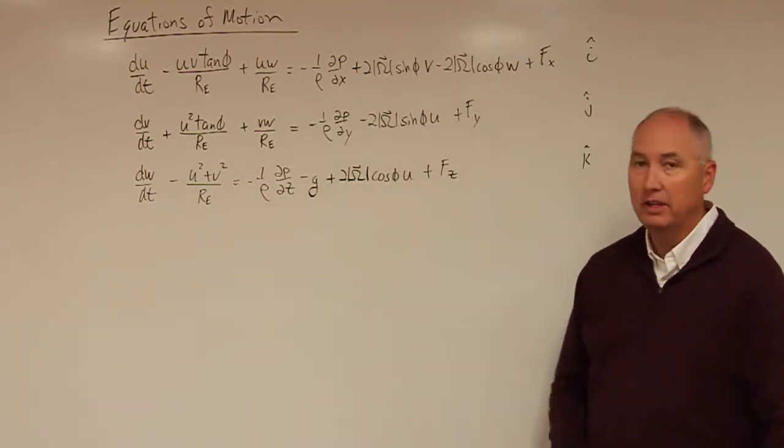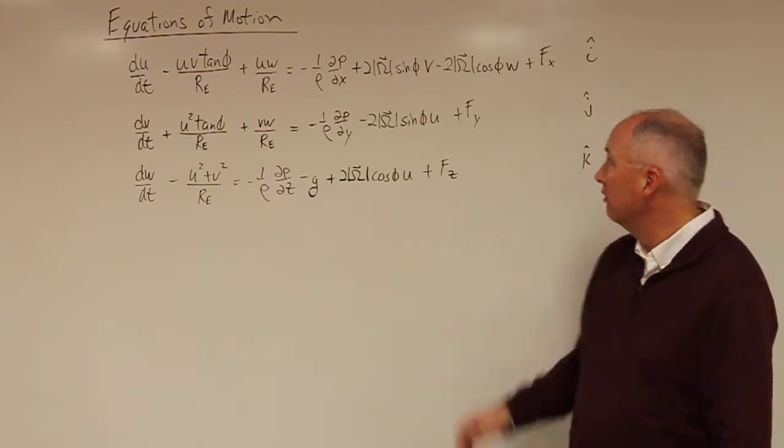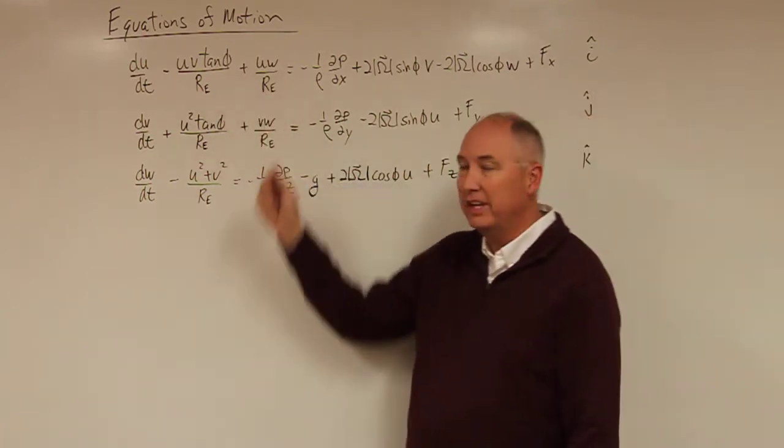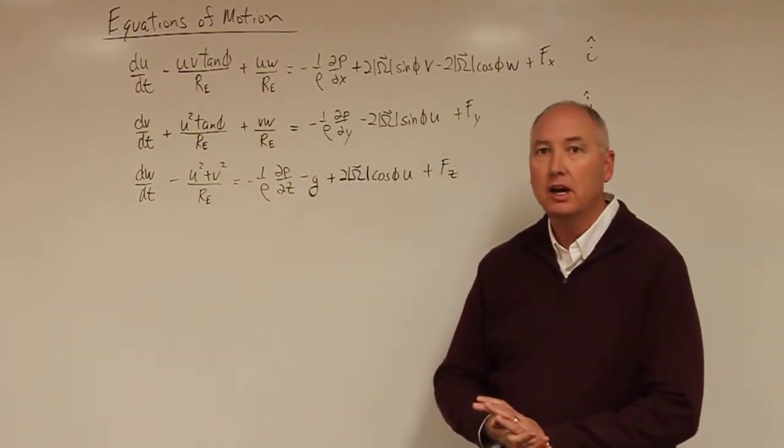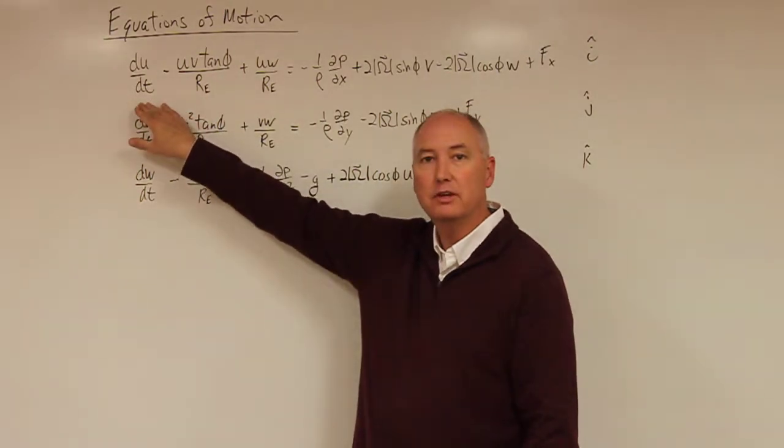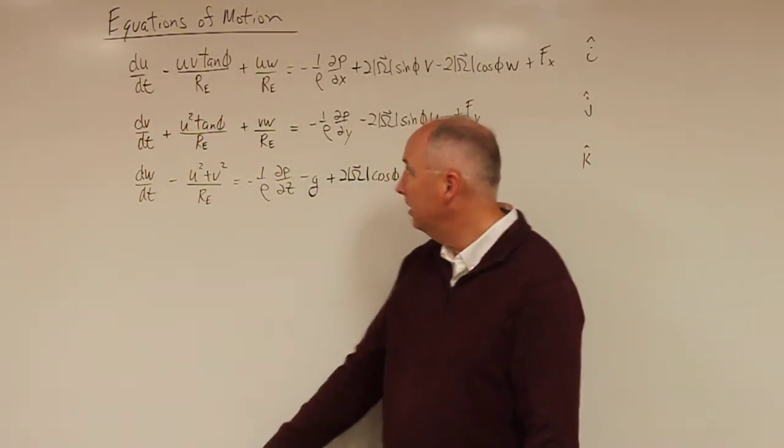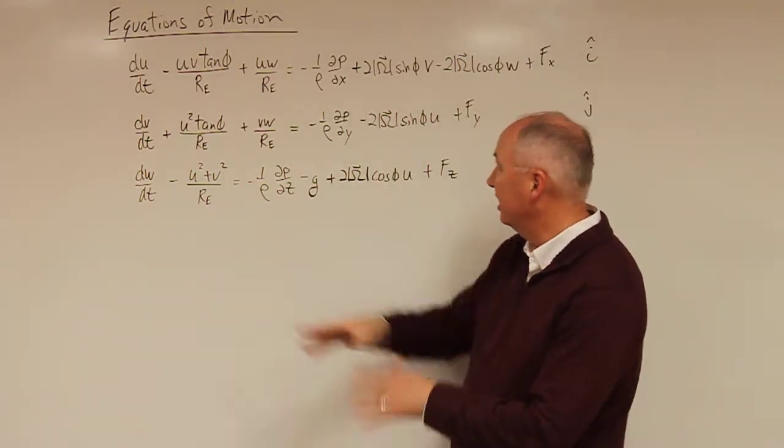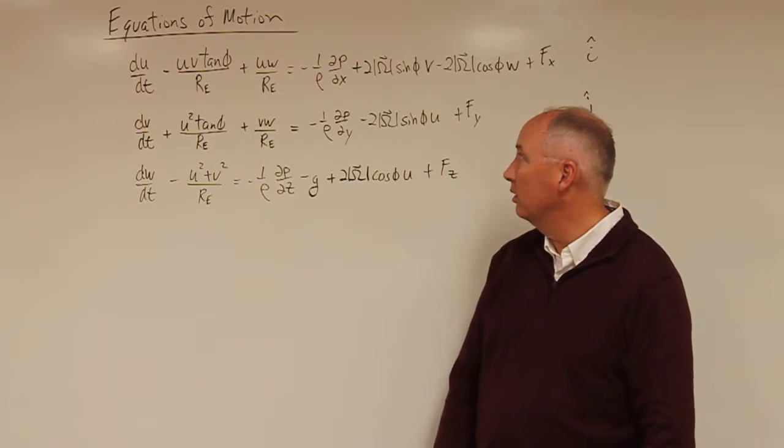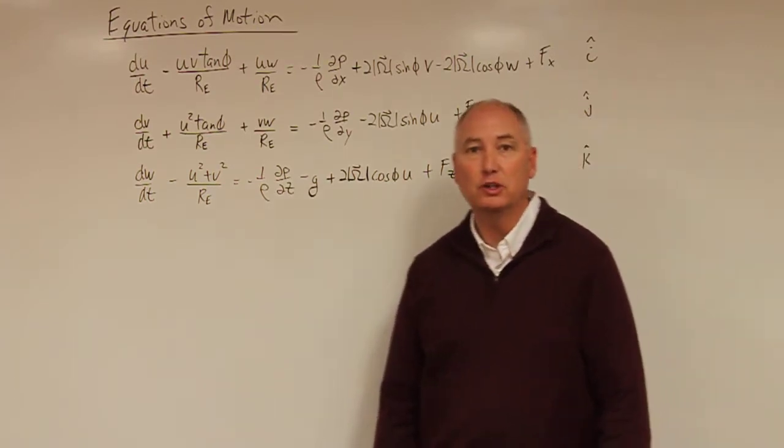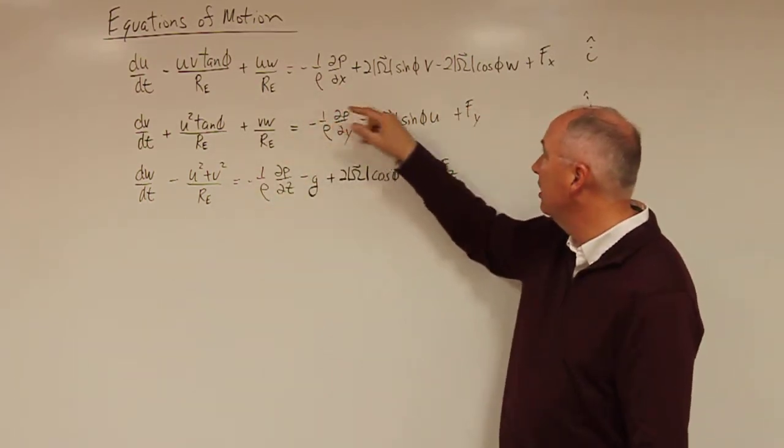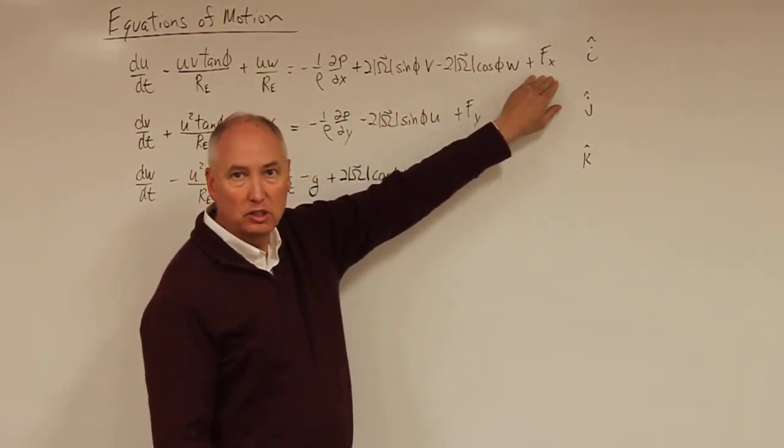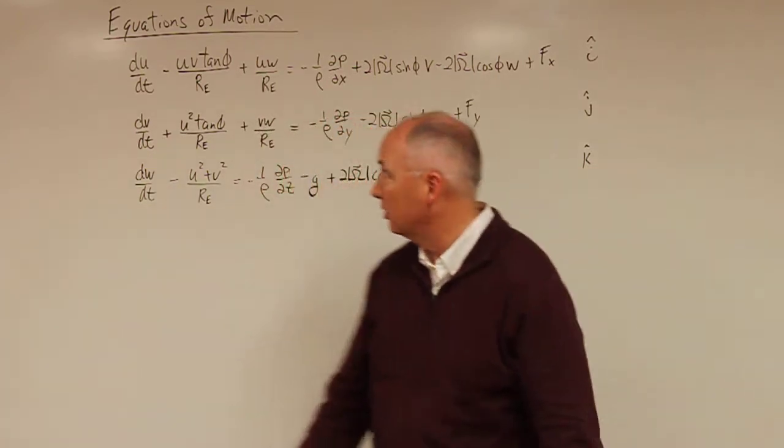Here we have the full equations of motion for the i-hat, the j-hat, and the k-hat directions. For the east-west component of the equation of motion, you have the total derivative of u with respect to time minus two terms, which I will talk about here in just a second, minus the one over rho partial p partial x, which is the pressure gradient force, and then we have the Coriolis force, and then we have friction, which serves to slow down the flow in the east-west direction.